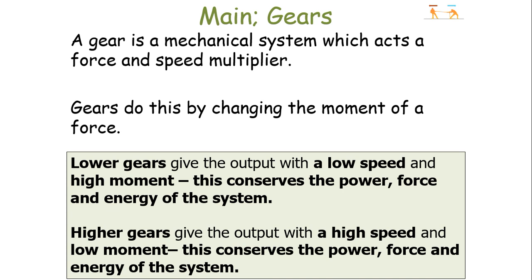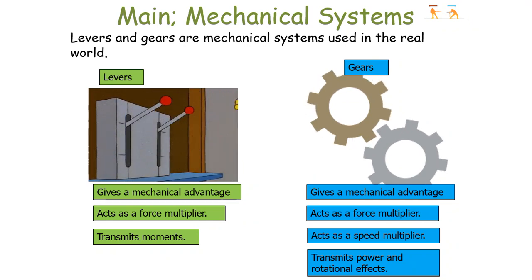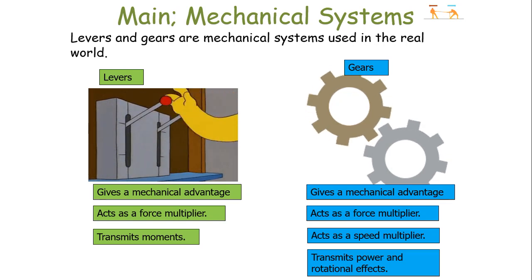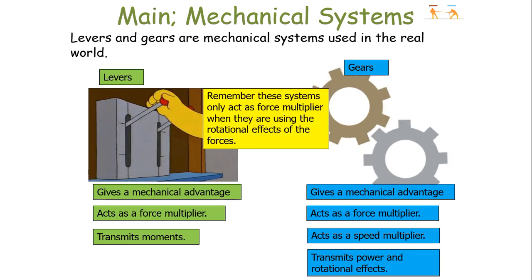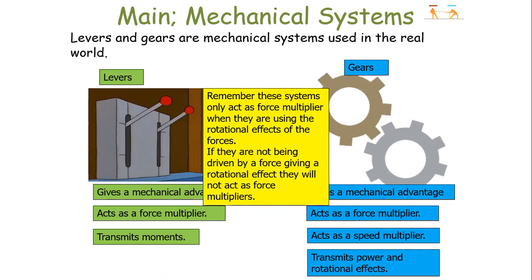A gear is a mechanical system which acts as a force and speed multiplier, and gears do this by changing the moment of a force. Low gears give a low speed and a high moment to conserve the power, force, and energy of the system, whilst high gears give an output with a high speed and a low moment, which also conserves the power, force, and energy of the system. Levers give a mechanical advantage and act as a force multiplier because they transmit moments and keep moments constant, whilst gears give a mechanical advantage, act as a rotational force multiplier, and act as a speed multiplier, keeping power and force constant in the system. These systems will only act as force multipliers when the rotational effects of forces — the moments — are being used.